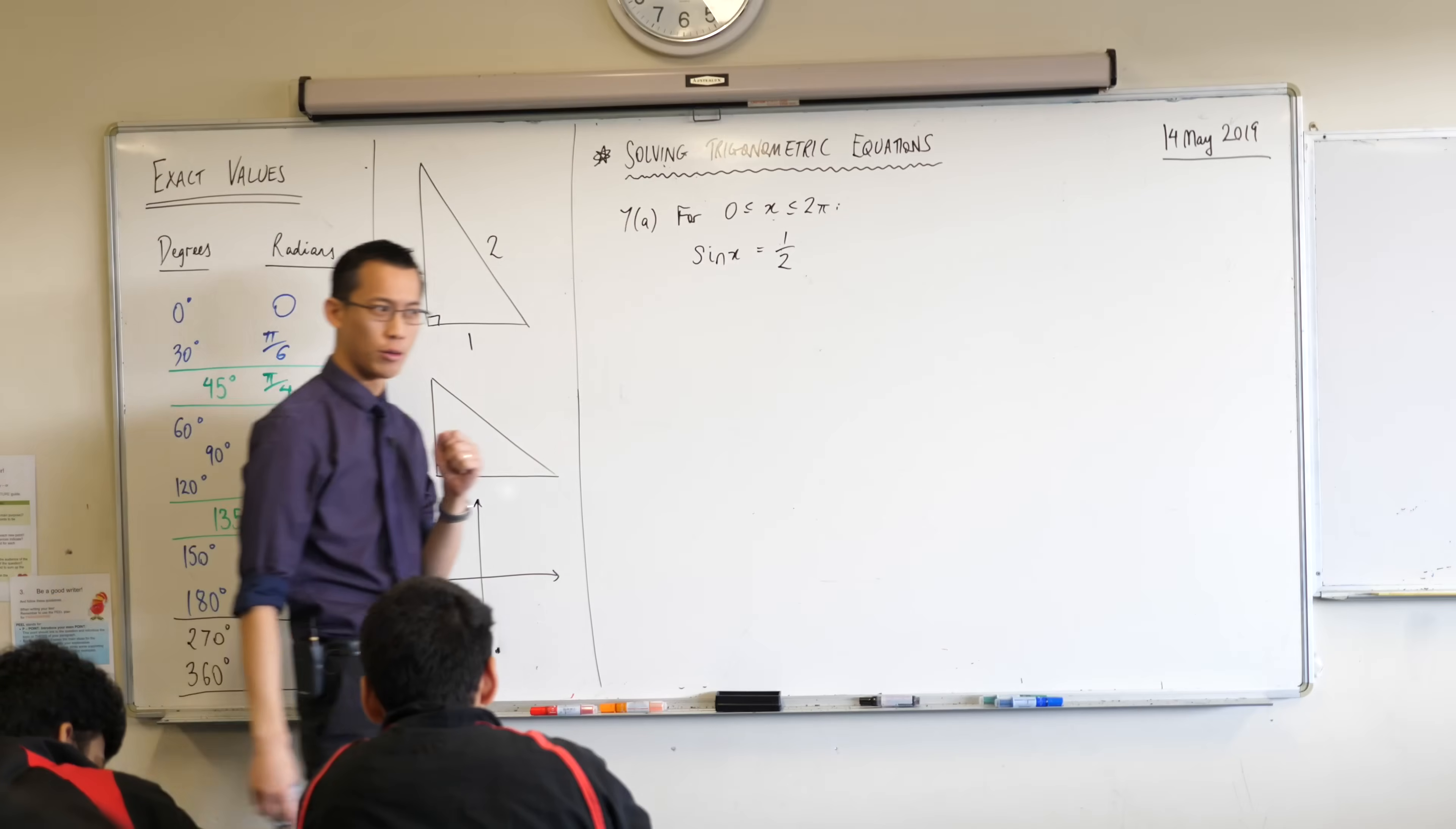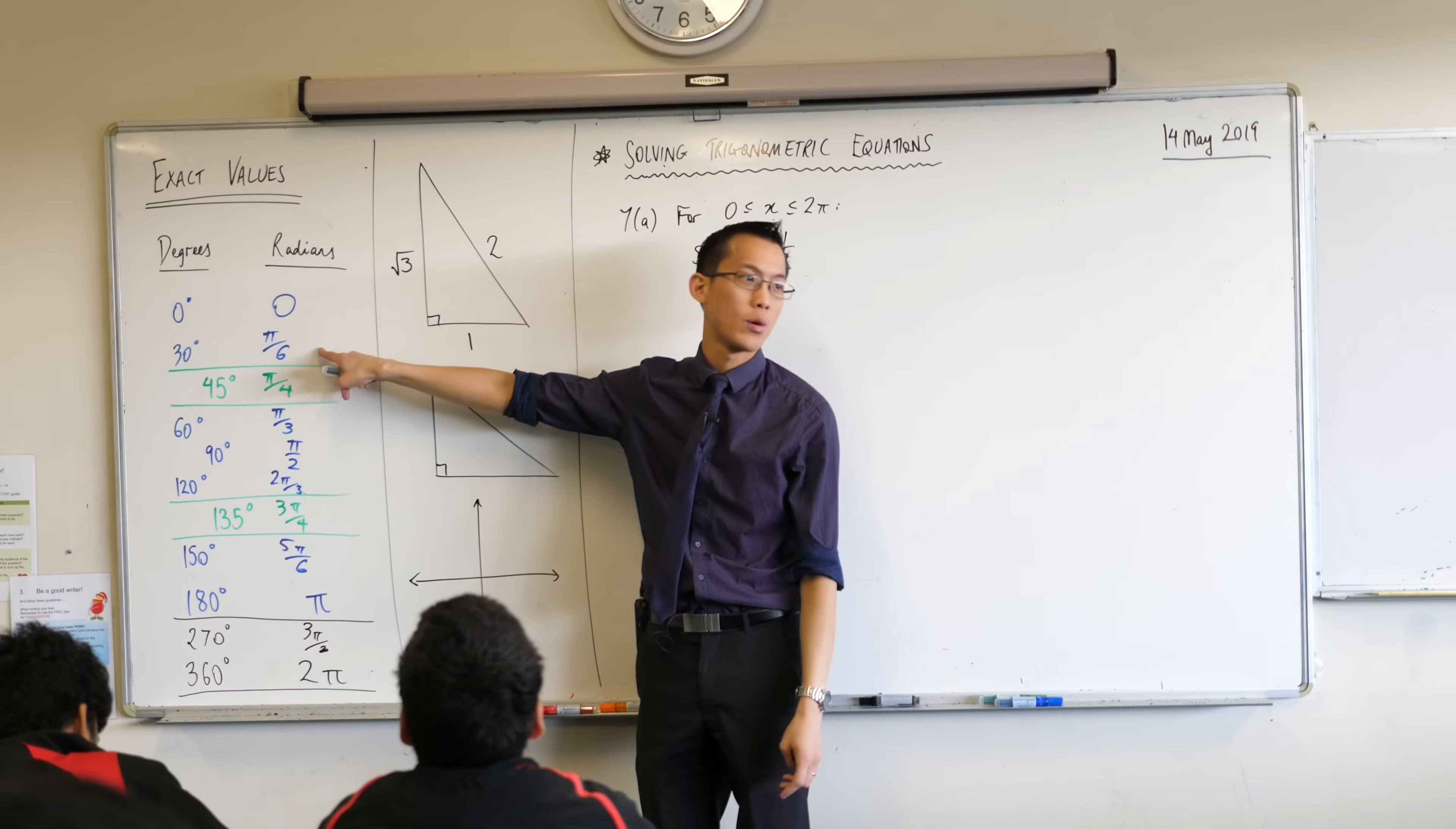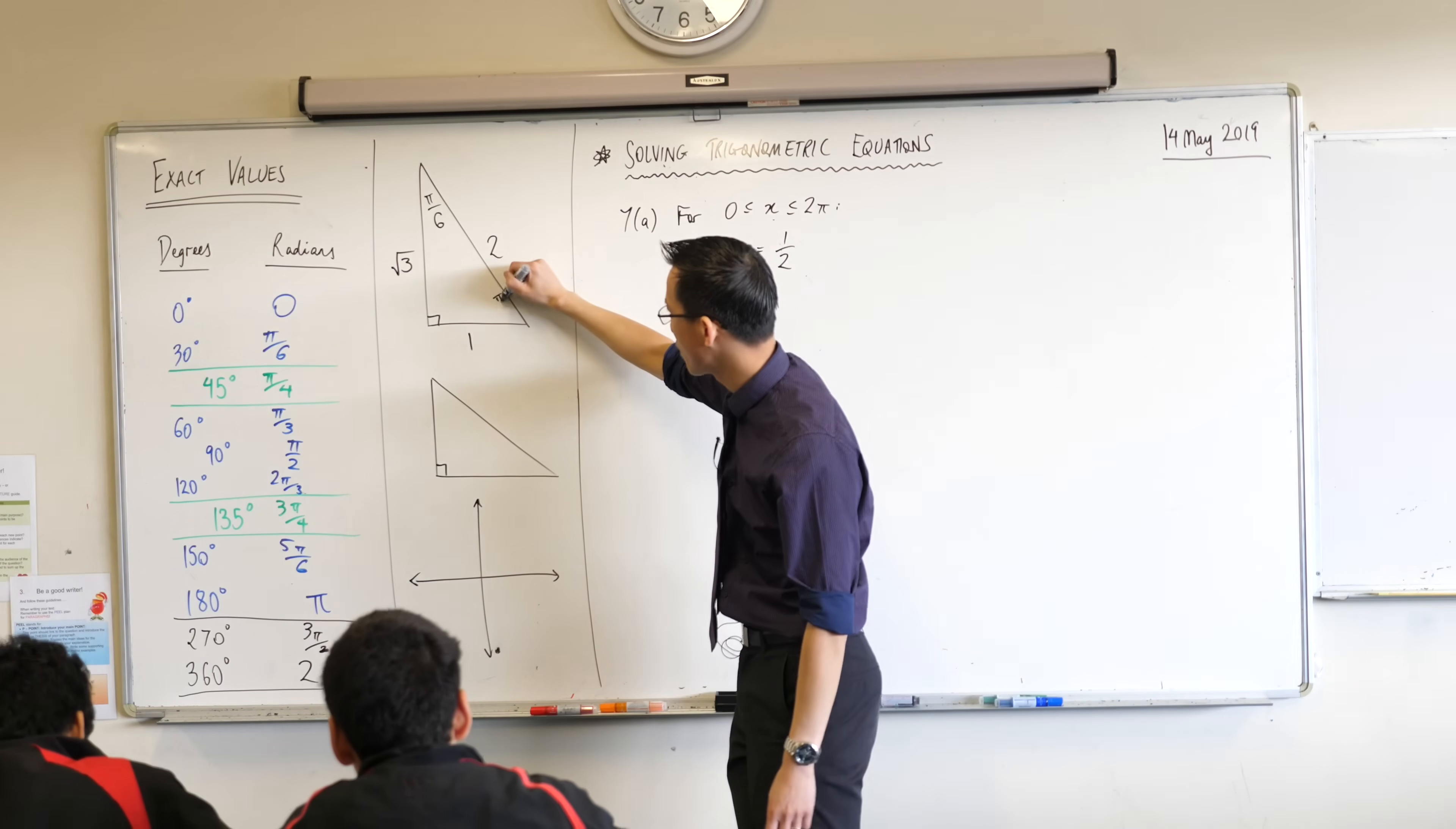Now we called this the 30-60-90 triangle. Which angle would normally be 30 degrees? The one at the top. But we don't want to write 30 degrees we want to write π/6 right? So I'm going to pop π/6 up there. This is 30 degrees, π/6 radians. If this one is 60 degrees it should be π/3.